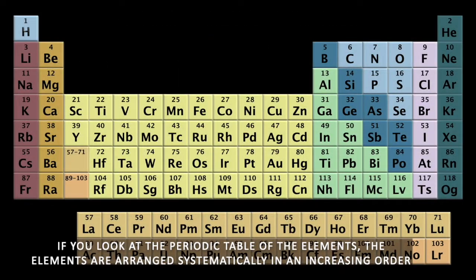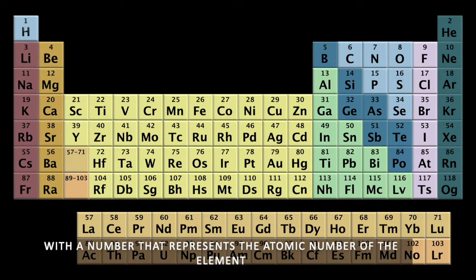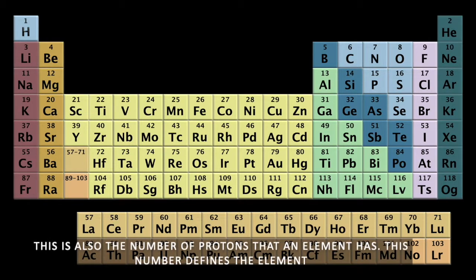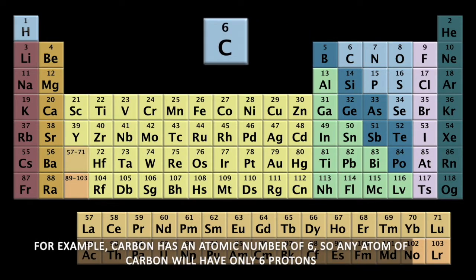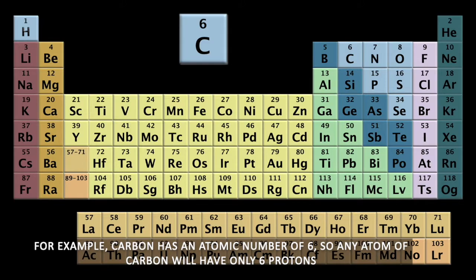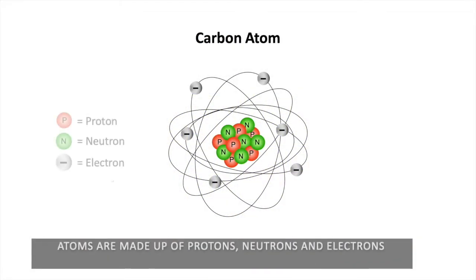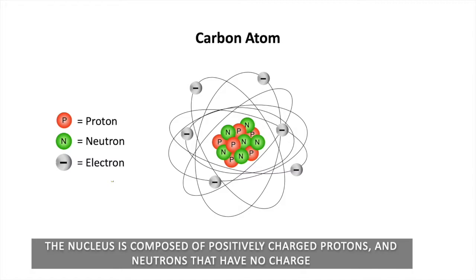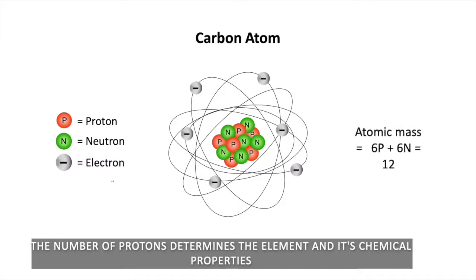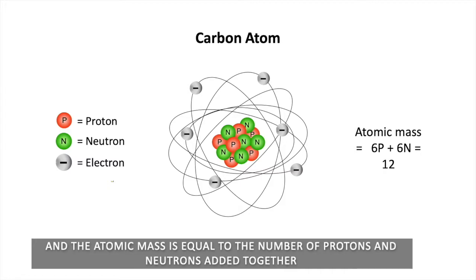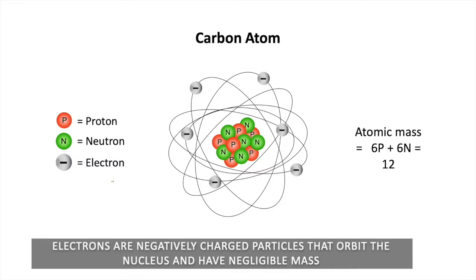If you look at the periodic table of the elements, the elements are arranged systematically in increasing order, with a number that represents the atomic number of the element. This is also the number of protons that an element has, and this number defines the element. For example, carbon has an atomic number of 6, so any atom of carbon will have only 6 protons. Atoms are made up of protons, neutrons, and electrons. The nucleus is composed of positively charged protons and neutrons that have no charge. The atomic mass is equal to the number of protons and neutrons added together. Electrons are negatively charged particles that orbit the nucleus and have negligible mass.